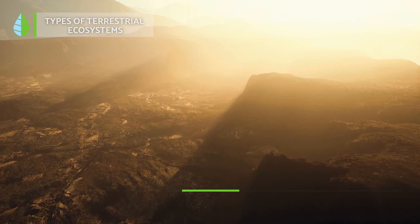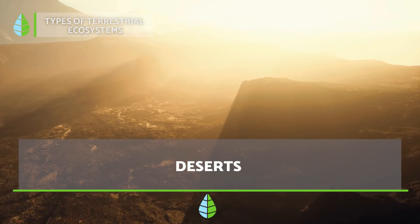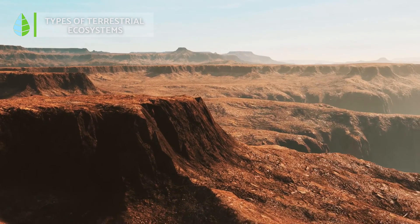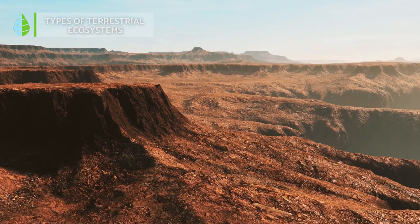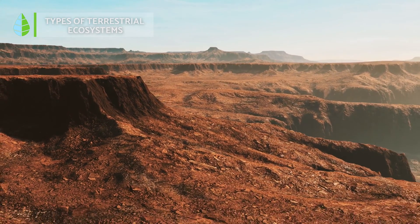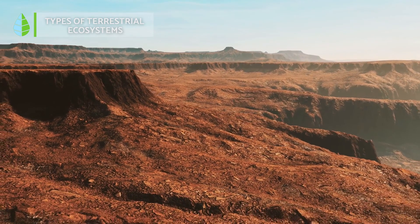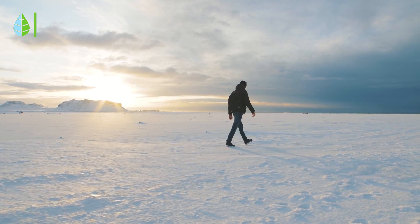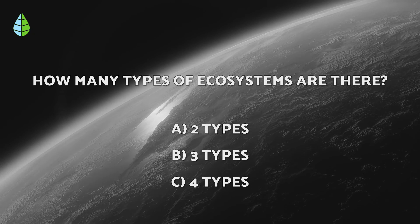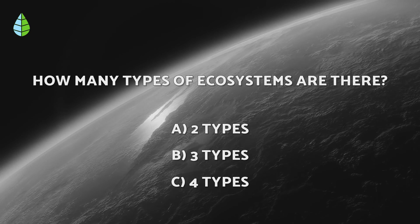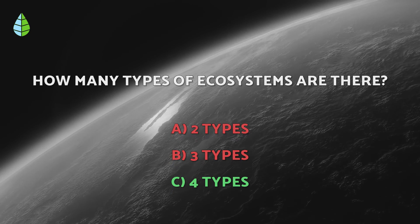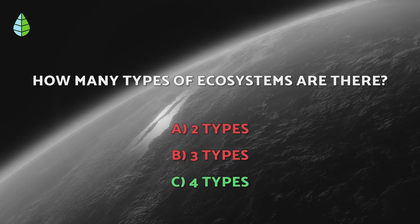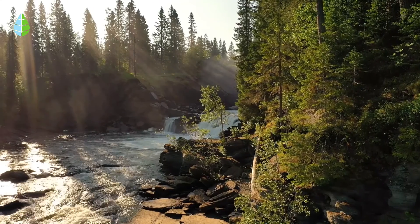Finally, we encounter deserts. These ecosystems are characterized by harsh conditions, resulting in sparse flora and fauna. There are hot deserts in subtropical regions with limited precipitation, as well as polar deserts in colder regions. Going back to the question we asked earlier — the correct answer is C. There are four types of ecosystems: terrestrial, aquatic, mixed, and artificial.